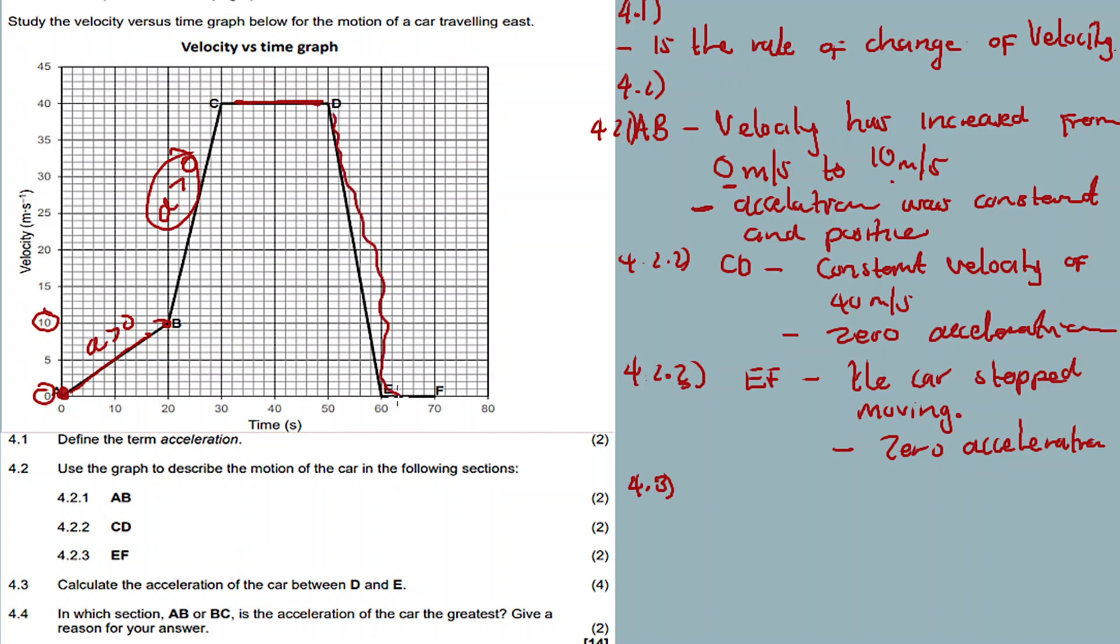Question 4.3: Calculate the acceleration of section D-E. So we need the acceleration of D-E. The acceleration is the gradient. So gradient of D-E is equal to - we calculate exactly like you did in math, analytical geometry. Let's say D is point number two, let's say E is point number one. What are the coordinates for D? It's x, y, so we see E is 60 and 0.